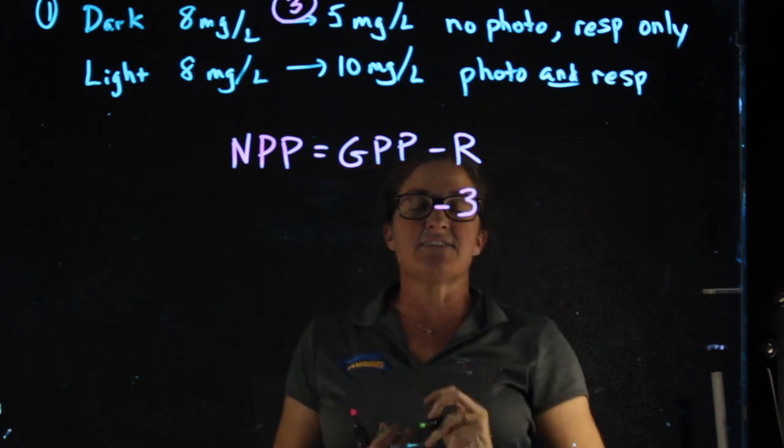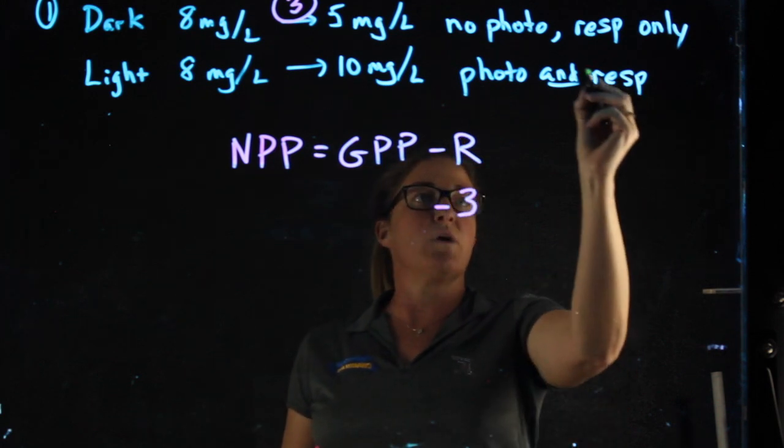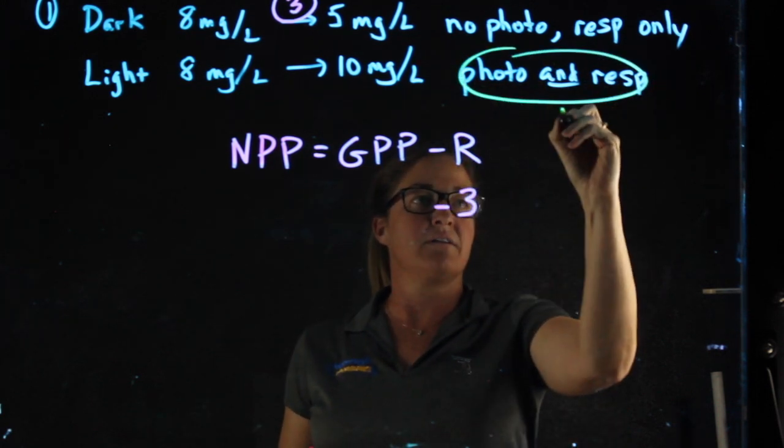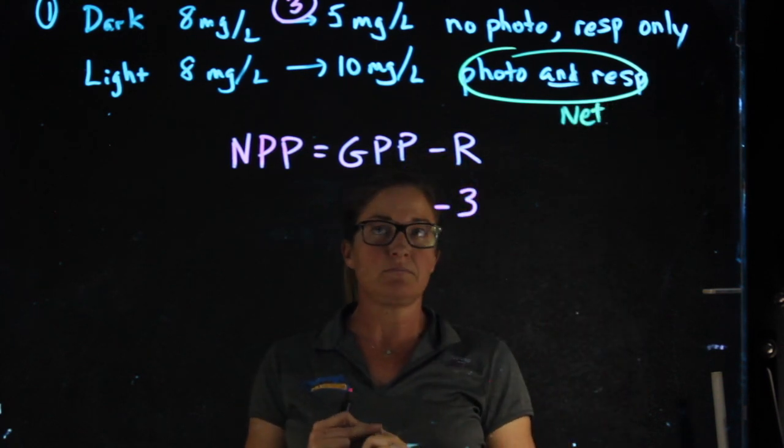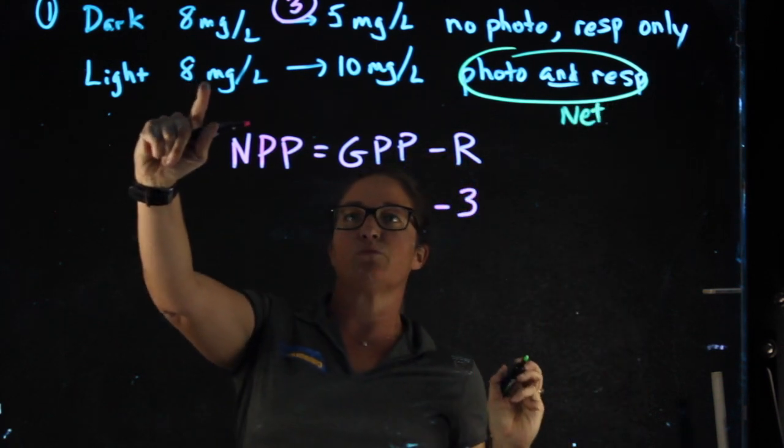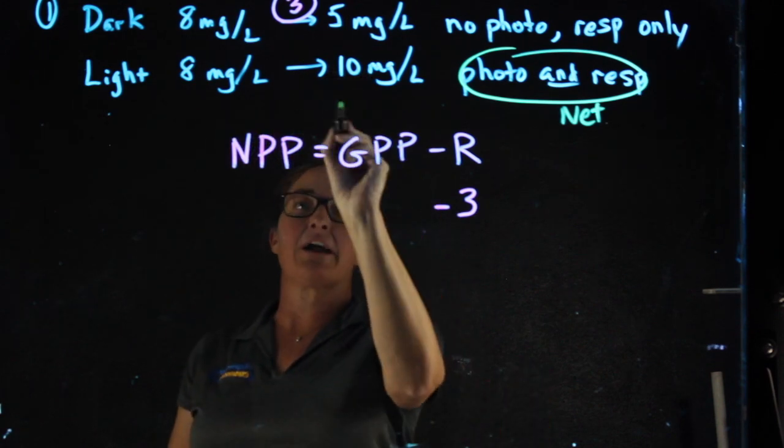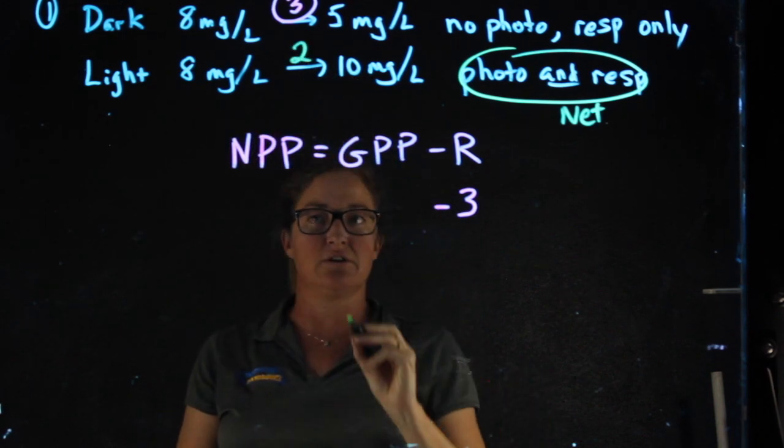In the light, photosynthesis and respiration were occurring. When we have both things occurring, that is net. Our concentration went from 8 up to 10, which is a change of 2,